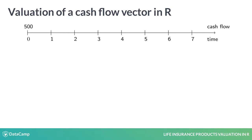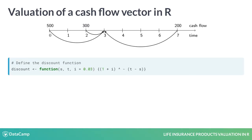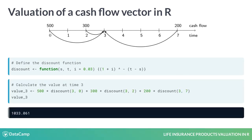Let's do this in R. You face a cash flow of 500 euro at time 0, 300 euro at time 2, and 200 euro at time 7. What is the value of this cash flow vector at time 3? You create a function called discount with three arguments: s, t, and i. The interest rate i has a default value of 0.03 or 3%.